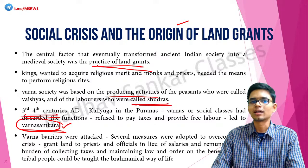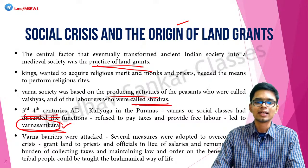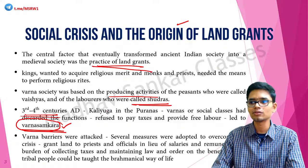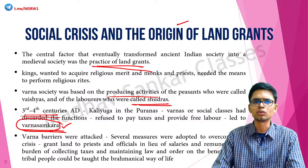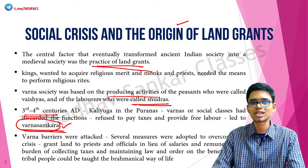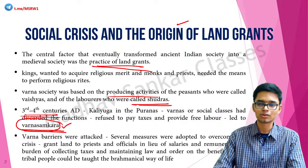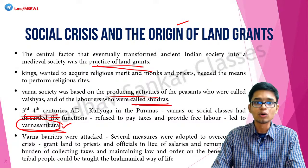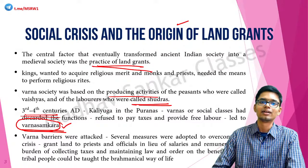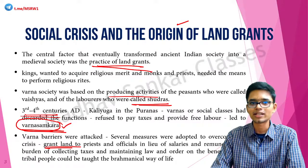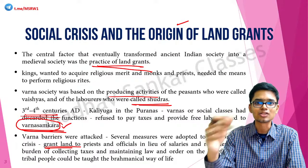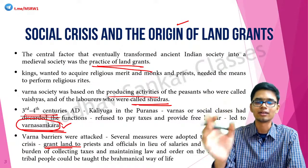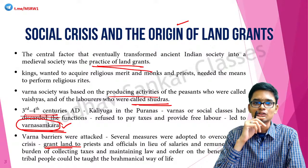Because of all these things, Varna barriers started getting attacked in society. Obviously the top two classes — Brahmanas and Kshatriyas — had to do something to preserve the Varna system. Manu, the very famous lawgiver, says that Shudras and Vaishyas should not be allowed to deviate from their Varna rules. But the most effective way that Kshatriyas and Brahmanas found to overcome this crisis was to issue land grants. Kshatriyas simply parceled out these lands to priests and other officials in lieu of salary.